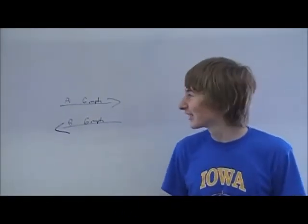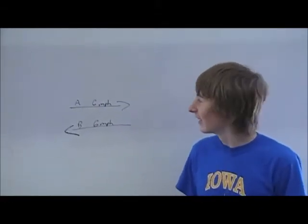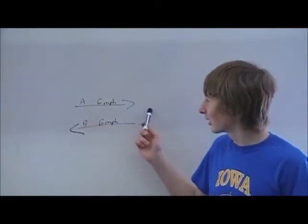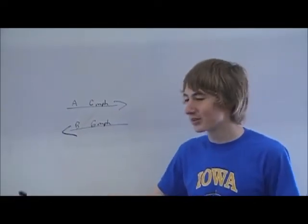Opposite vectors are vectors with the same magnitude in different directions. A goes 6 miles per hour this way, or goes 6 miles per hour this way. They're the opposite.